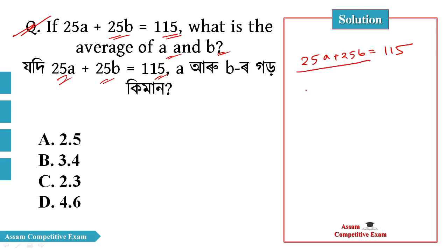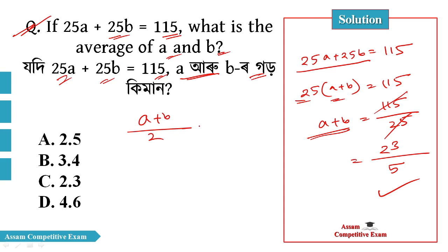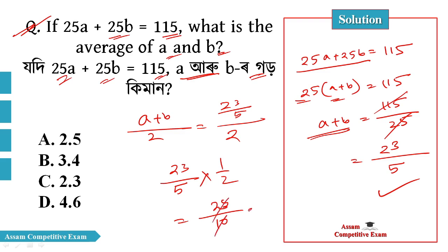What is the average of a and b? 25(a plus b) equals 115, so a plus b equals 115 divided by 25, which is 23 by 5. The average is (a plus b) divided by 2, which is 23 by 5 into 1 by 2, equal to 2.3. Option C is correct — 2.3.